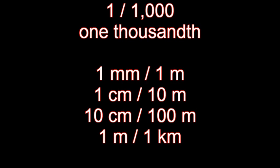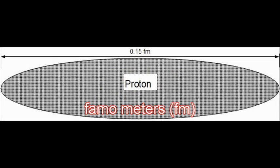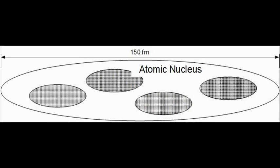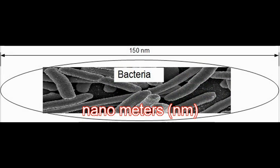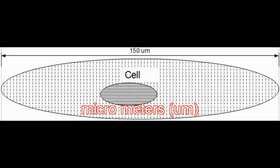1 millimeter is 1,000th of a meter. 1 centimeter is 1,000th of 10 meters. 10 centimeters is 1,000th of 100 meters. 1 meter is 1,000th of a kilometer. All of these ratios can be represented and clearly visualized from the facilities of the Think Park. By multiplying various scales in steps of 1,000, we can attain a further level of visualization and appreciation of the size of our reality from atoms to the universe. A proton is about 1,000th of the size of an atomic nucleus. An atomic nucleus is about 1,000th of the size of an atom. A small bacteria is about 1,000 times larger, and a small cell is 1,000 times larger than that.